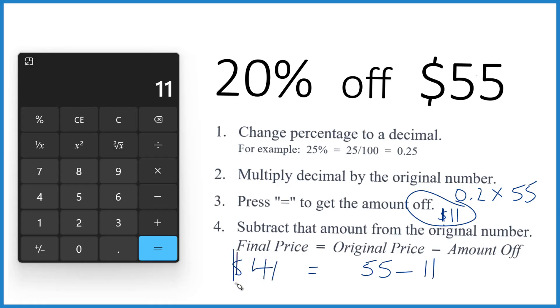So you'll pay $44 if you get 20% off a $55 item. That's it.